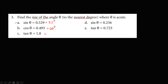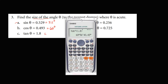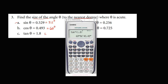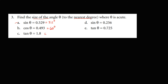For tangent theta equals 1.8, we use shift tangent of 1.8, which gives 60 degrees and 56 minutes. Since 56 minutes is more than 30 minutes, this rounds up to the nearest degree, so the answer is 61 degrees.